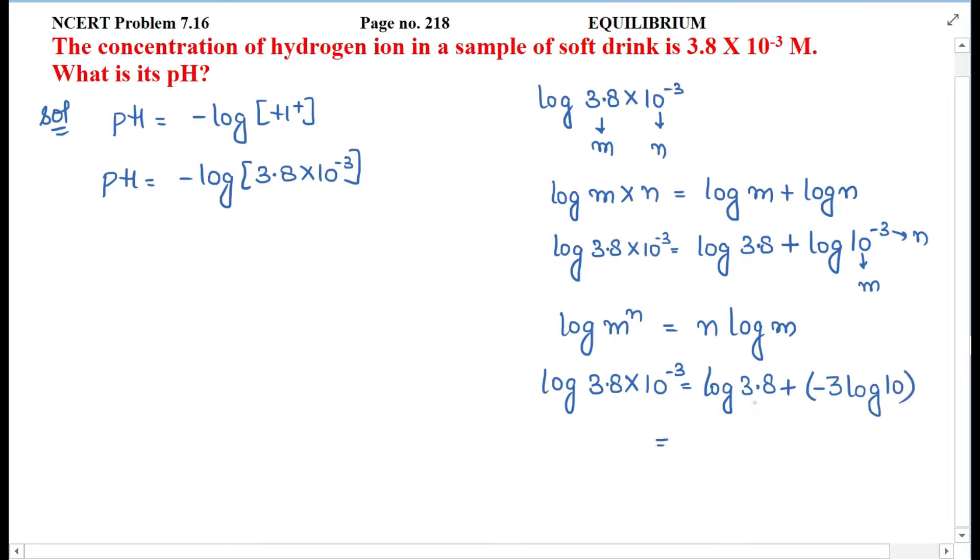Now we'll put the values. Log 3.8 is 0.58, and log 10 value is 1, so plus minus 3 × 1. So 0.58 minus 3, that will be minus 2.42.